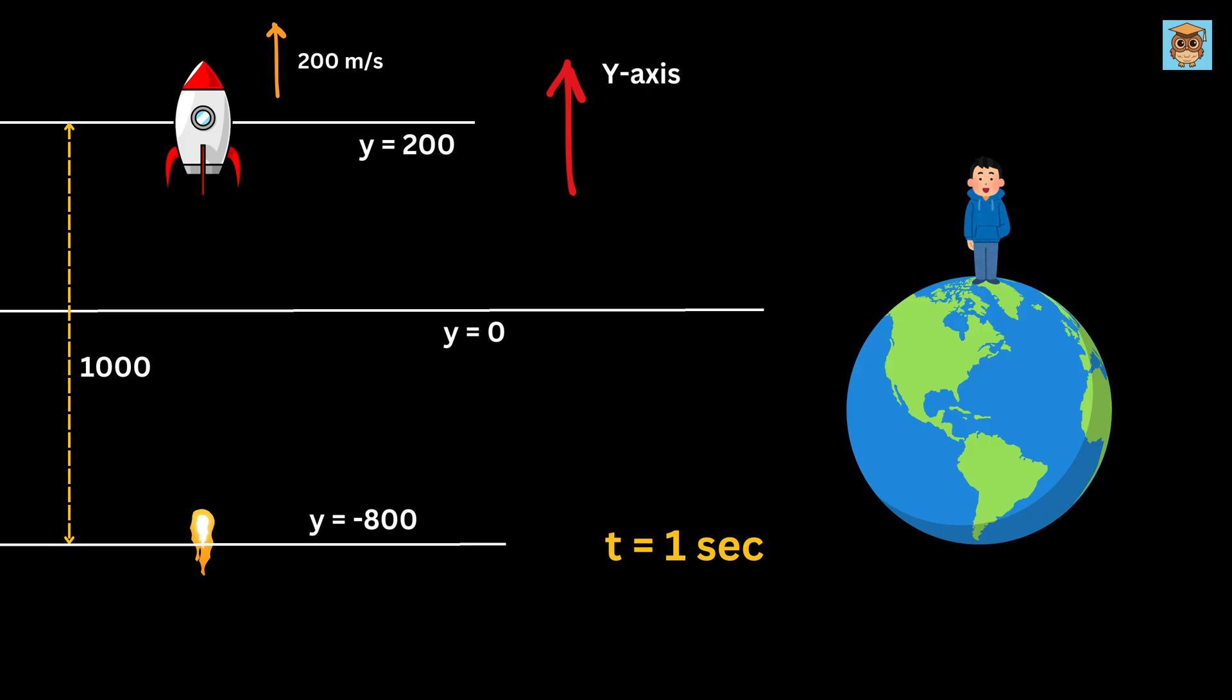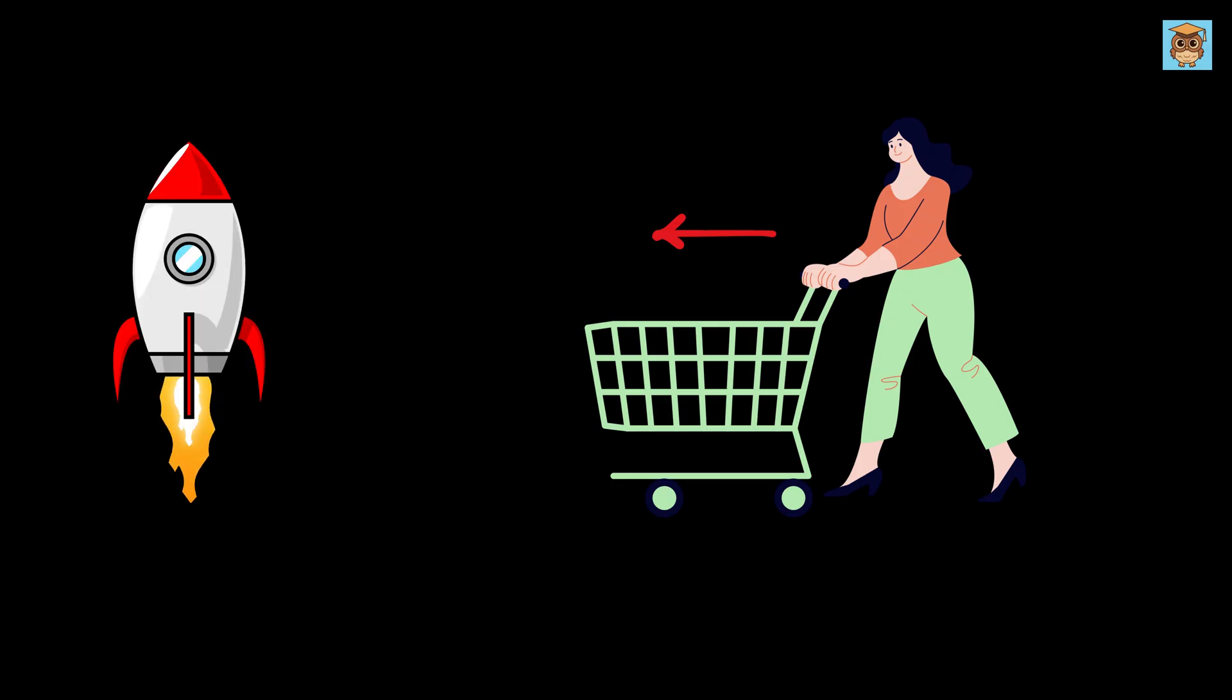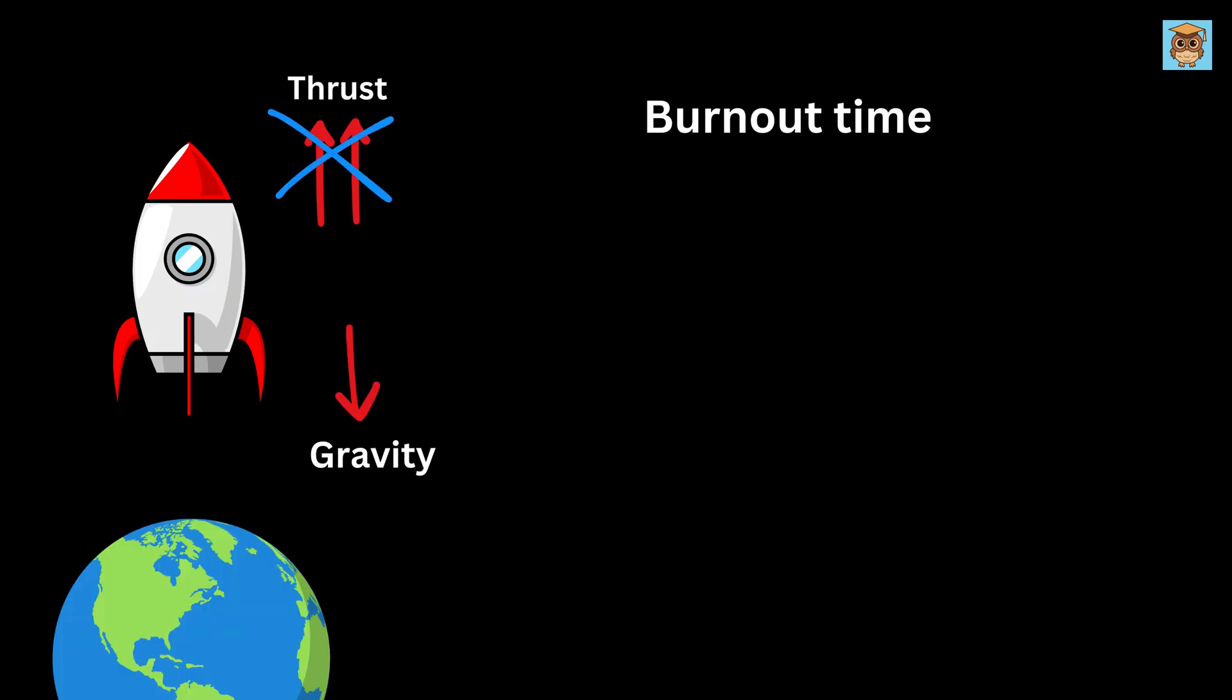Imagine pushing a shopping cart. If it's full of heavy stuff, it's hard to get going. As you take stuff out, it gets lighter and the same push makes it move faster. That's what's happening with the rocket: its acceleration keeps growing as it loses mass. This goes on until the fuel runs out, also known as the burnout time. Once the fuel's gone, there's no more thrust, no more gases shooting out. Now only gravity is acting, pulling the rocket down. It'll keep rising for a bit because of the speed it built up, but gravity slows it down. Eventually it'll stop going up and start falling back to earth.